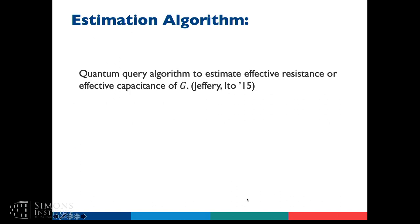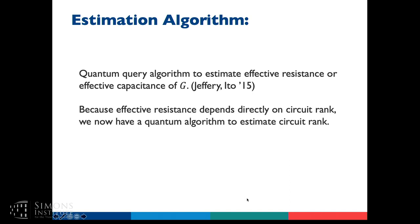Another nice thing about this result: it was proved by second-year undergrads, one of whom didn't know anything about quantum mechanics. That's the nice thing about thinking about these primitives — it really makes quantum algorithm design a lot more accessible to people without a quantum computing background. Since there is a quantum algorithm to estimate effective resistance and effective capacitance, if you can create an ST connectivity problem whose effective resistance encodes some quantity of interest, this algorithm gives you a way to estimate that quantity — for example, immediately giving us an algorithm to estimate the circuit rank of a graph.